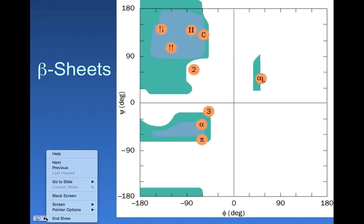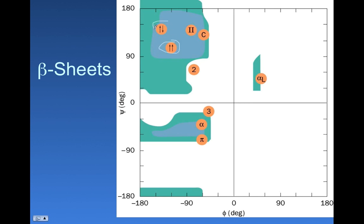The last secondary structure we're going to focus on are the beta sheets, and we're going to look at two of these beta sheets: the parallel beta sheet and the anti-parallel beta sheet.